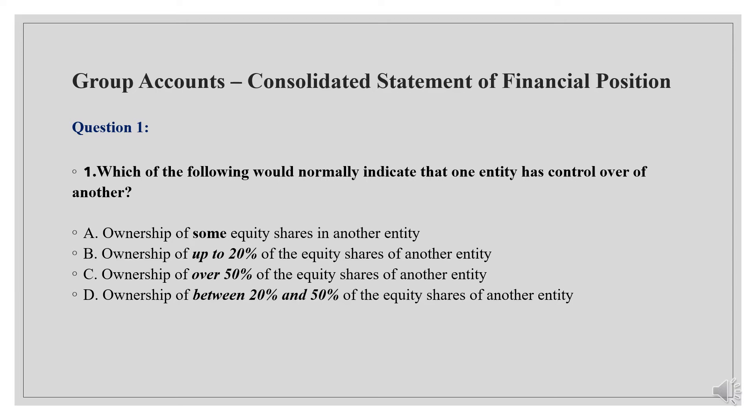Question 1: 如果一家公司拥有另一家公司50%以上的股权，就表明该公司拥有控制权，因此答案为C. Ownership of between 20% and 50% of the equity shares of another company means there is no control — the company can only exercise significant influence. They are associate companies. 如果一家公司拥有另一家公司20%到50%的股份，表明该公司没有控制权，只能起到重大影响，因而他们是联营公司. 我会在以后的视频中详细讲解联营公司的会计处理.